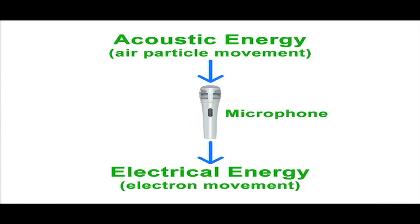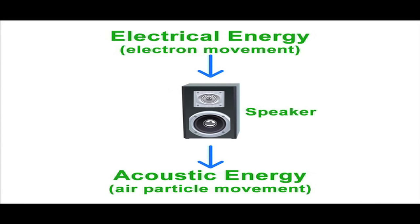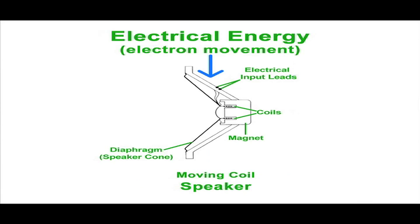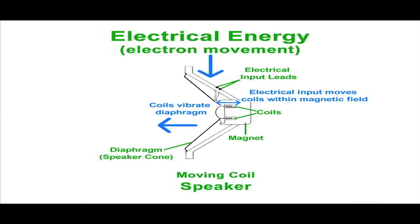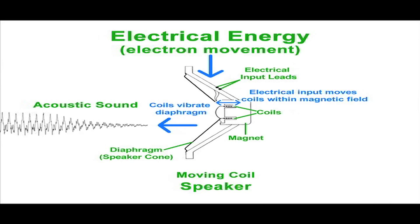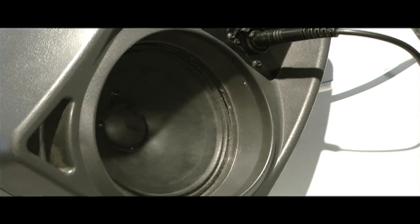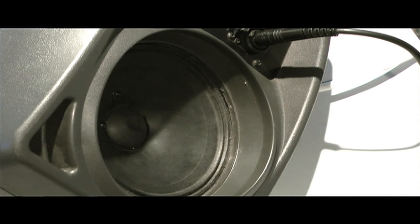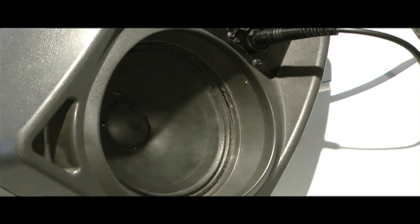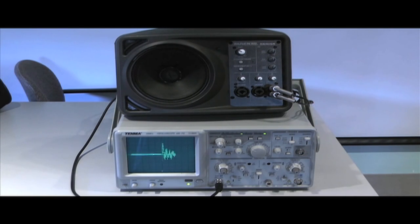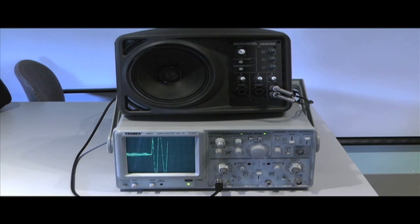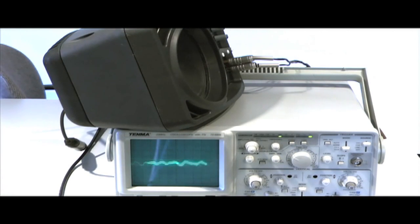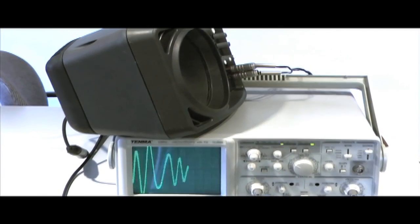To convert acoustic energy to electrical energy, speakers convert those electrical signals back into acoustic sound. Instead of acoustic pressure moving a diaphragm and coil, electrical signals cause the coil to move within the magnetic field. The coil vibrates the diaphragm, or speaker cone, which moves air molecules, generating acoustic sound pressure. You've seen this process in action if you've ever stood in front of a speaker while a rap song is playing. Next to the speaker is an oscilloscope, which allows us to see the level of the electrical signal over time as it's going to the speaker. Whenever there's a big change in level on the oscilloscope, the speaker cone moves. This is how speakers transduce.